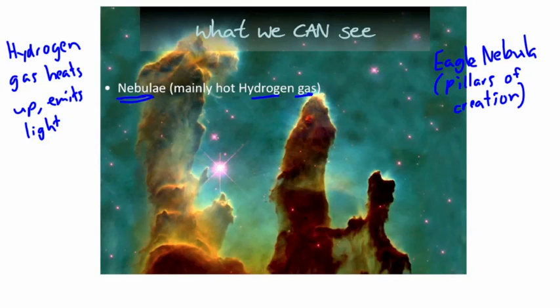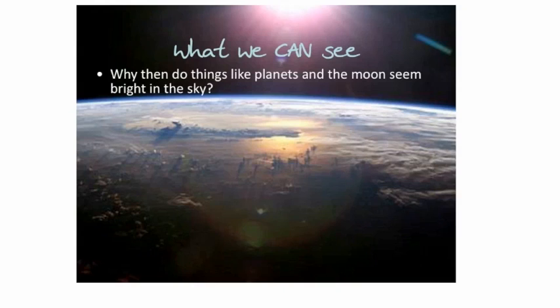And so what I mainly want to point out is that the things that we see in the sky when we look up are only things that emit light. Well, then you might think about this picture. That's another common one used in Apple commercials. So why then do things like planets and the moon seem bright in the sky? I mean, if you look at the Earth, for example, it doesn't actually give off much light. And yet it looks bright. Or if we look in the sky, we can see Venus or Mars. They look very bright in the sky.